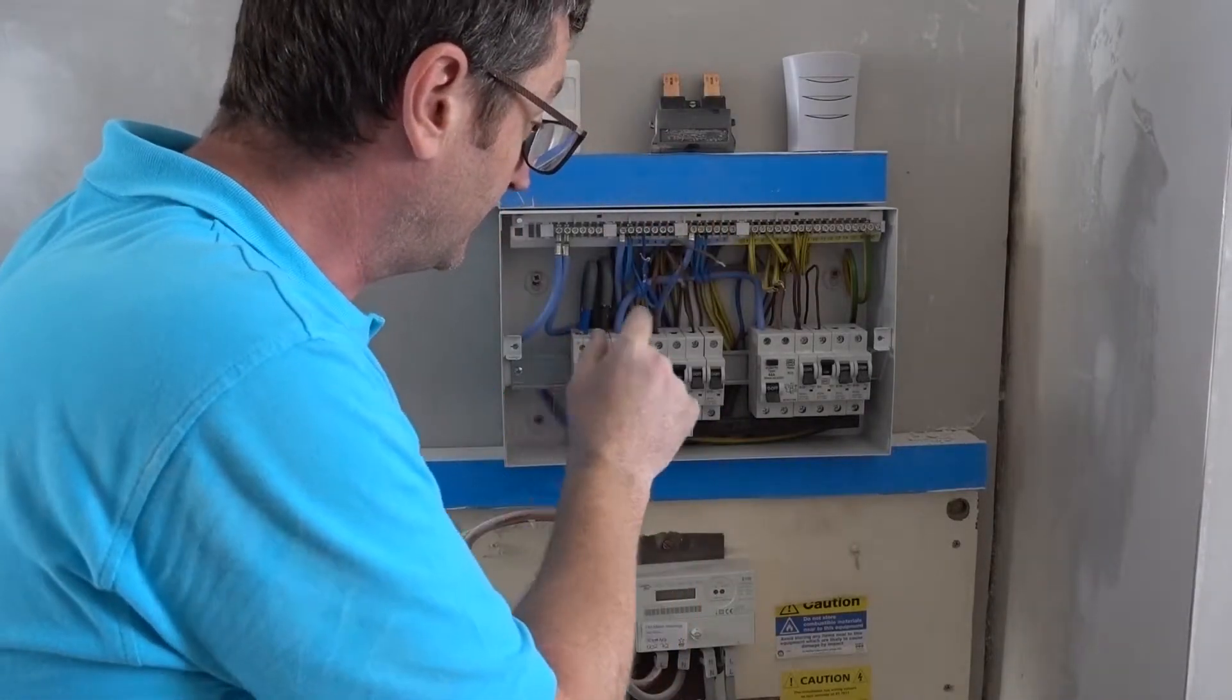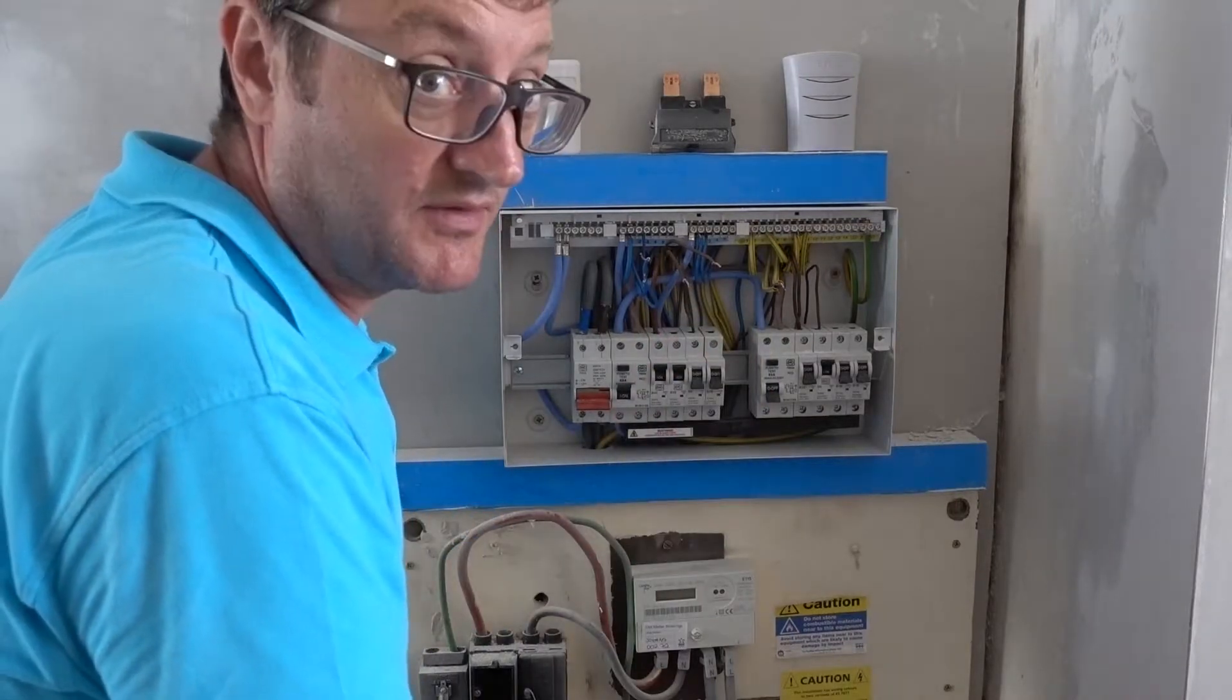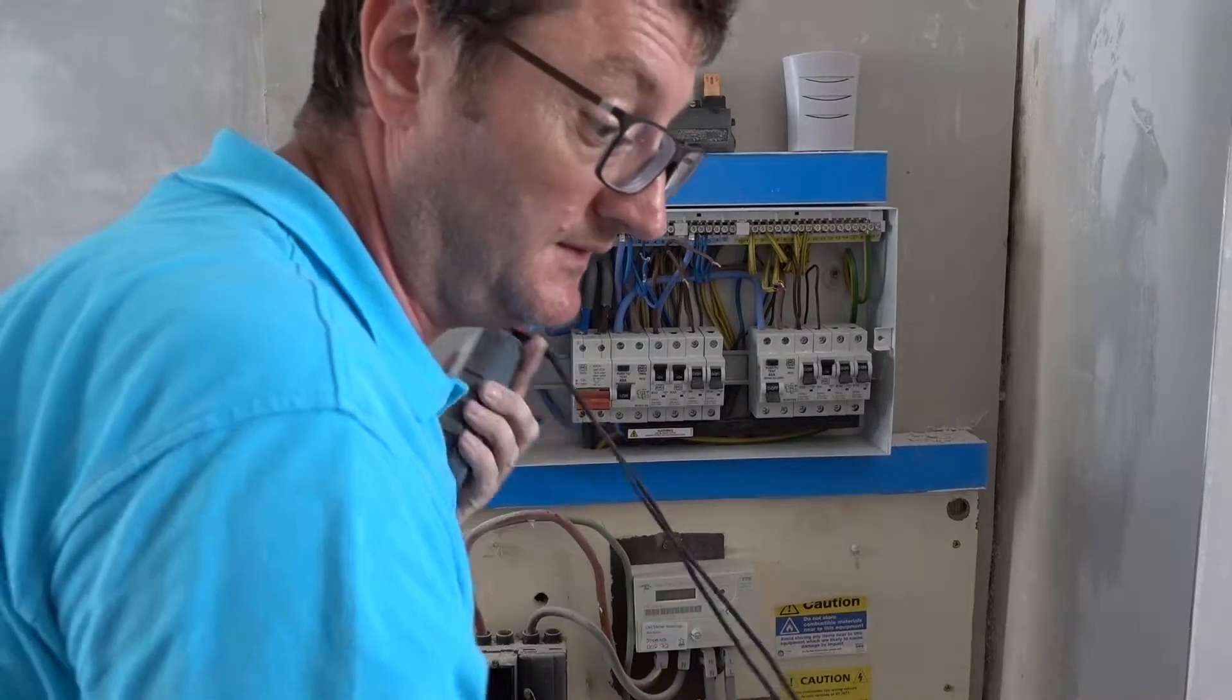So I've pulled the main fuse out and taken the front cover of the board off and disconnected the ring main wires. What I want to do is test continuity first of all.